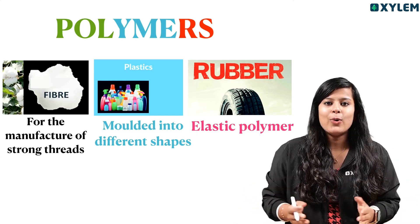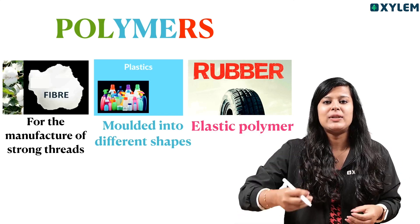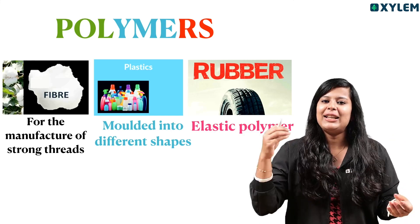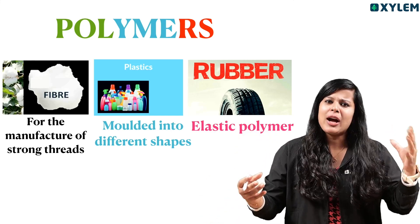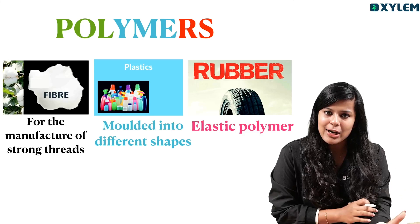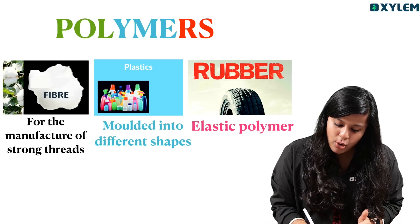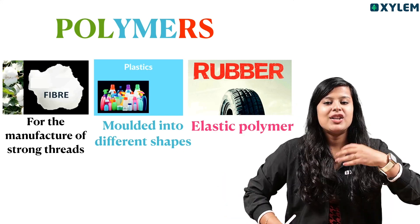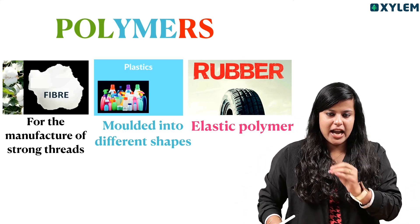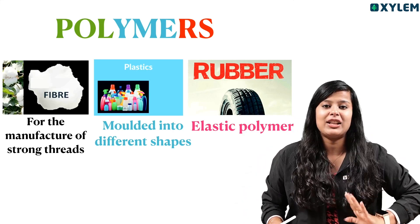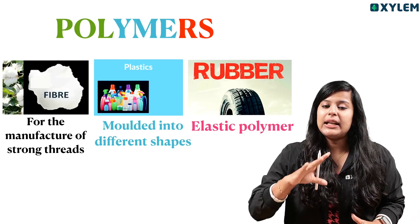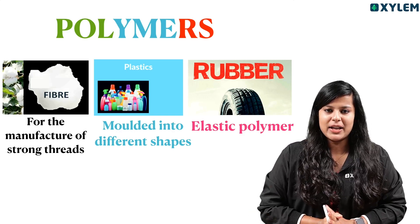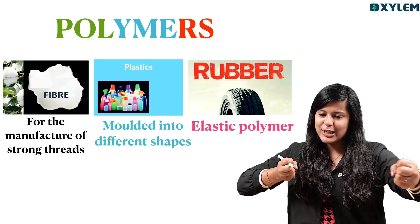Next one: plastics. We already know that in our daily life we are using so many plastic items — boxes, bottles, cups, buckets, etc. Plastic can be molded into different shapes. We can recycle it into any shape. Then last one: rubber. Rubber is an elastic polymer.